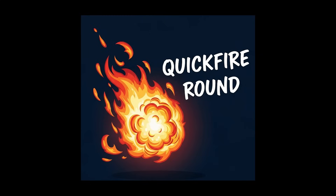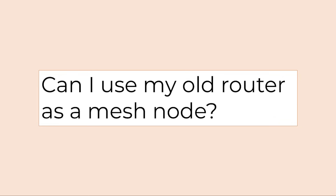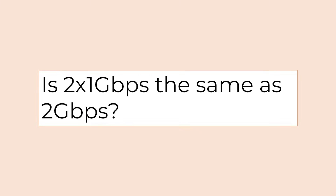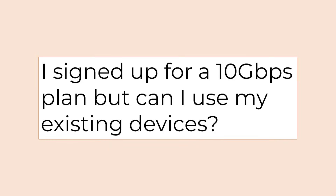Now for some rapid fire questions. Can I use my own router as a mesh node? Yes, if it supports things like AI Mesh from ASUS. Do mesh systems auto-switch my device to use the best node? Yes, most modern mesh systems do that. Is two times one Gbps the same as two Gbps? No, it's not the same — it means you have two separate one Gbps lines instead of a single two Gbps line.